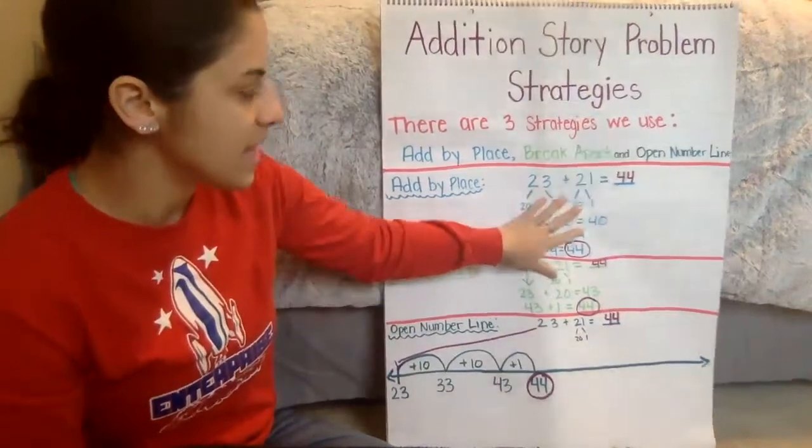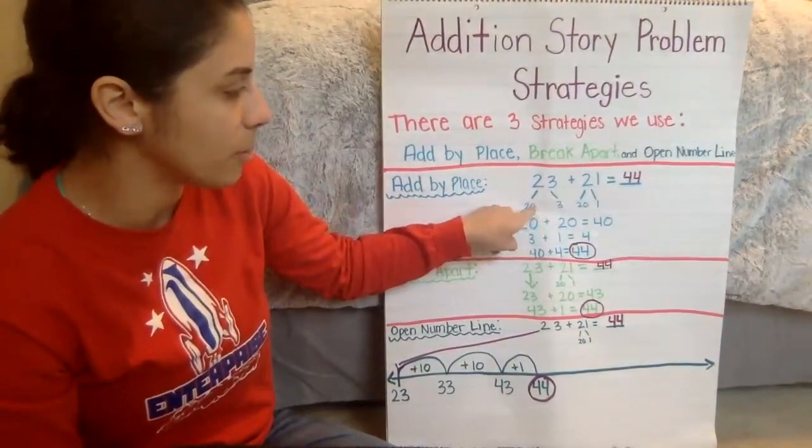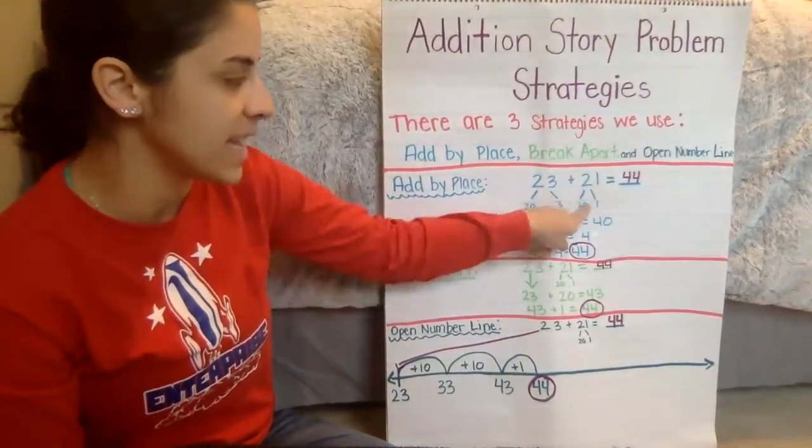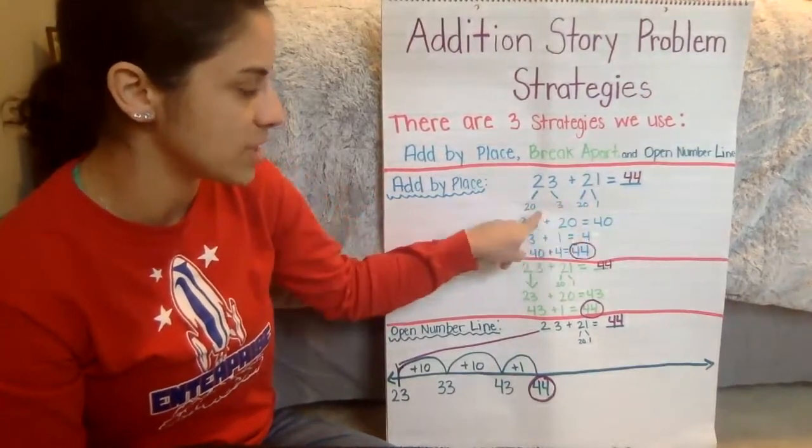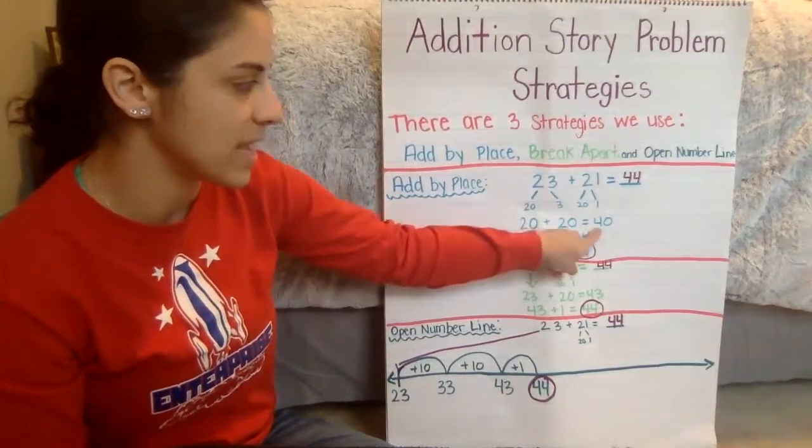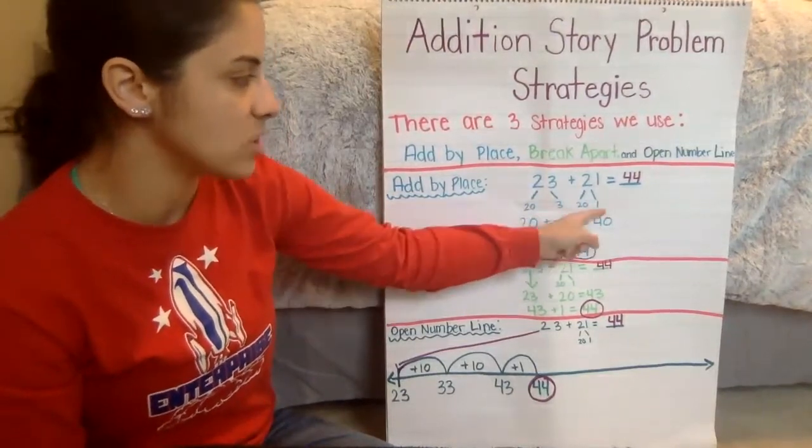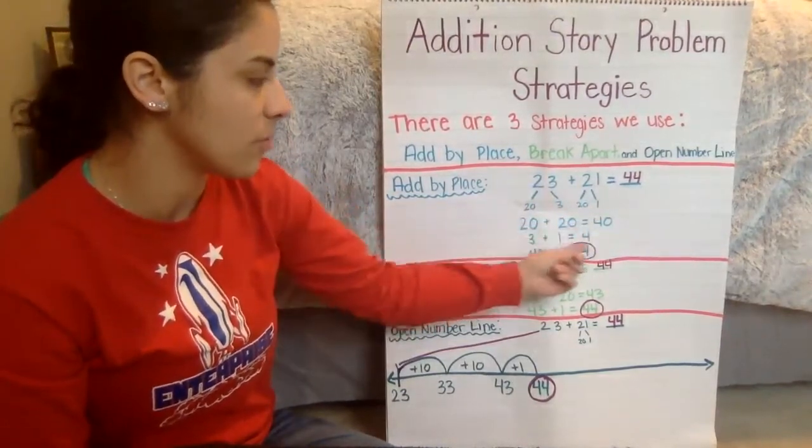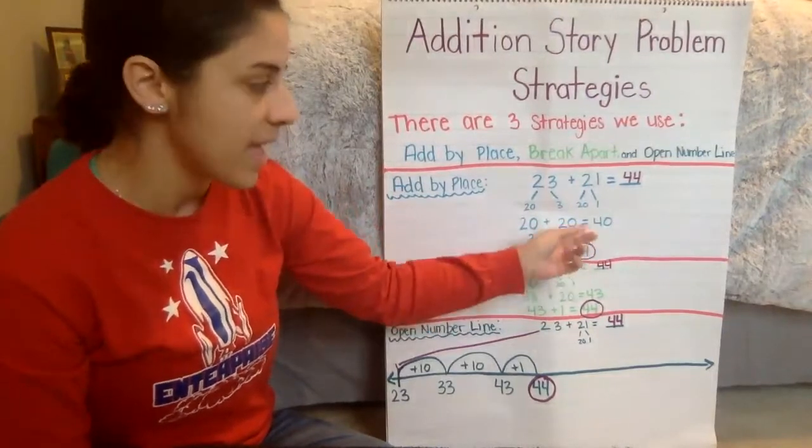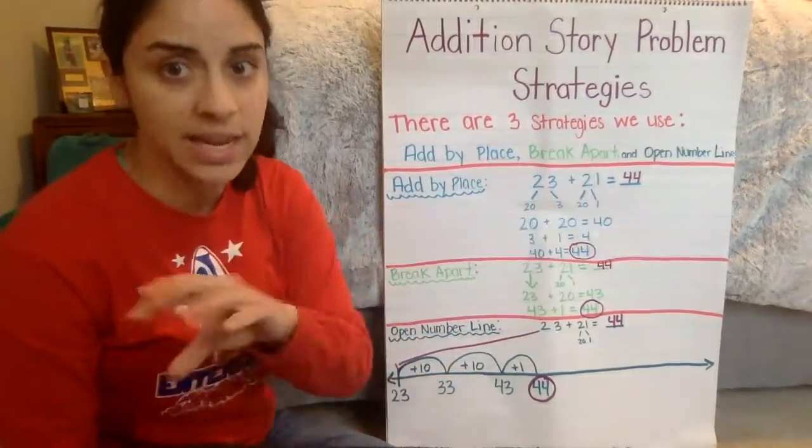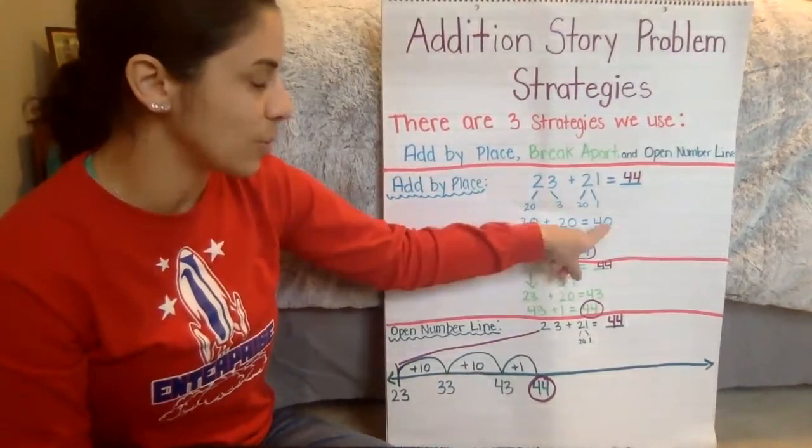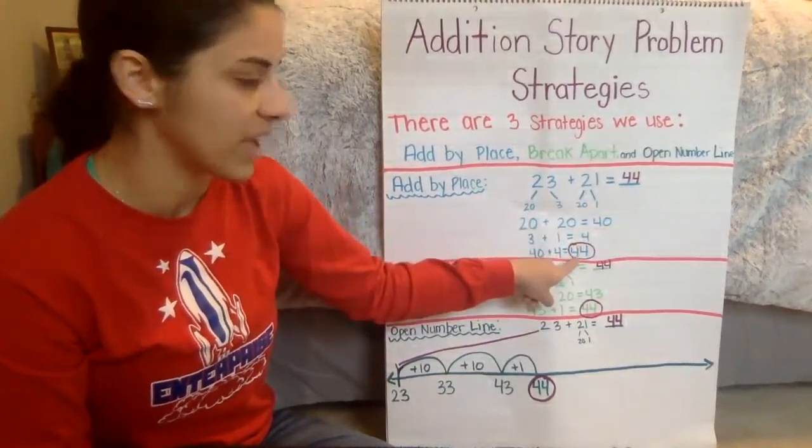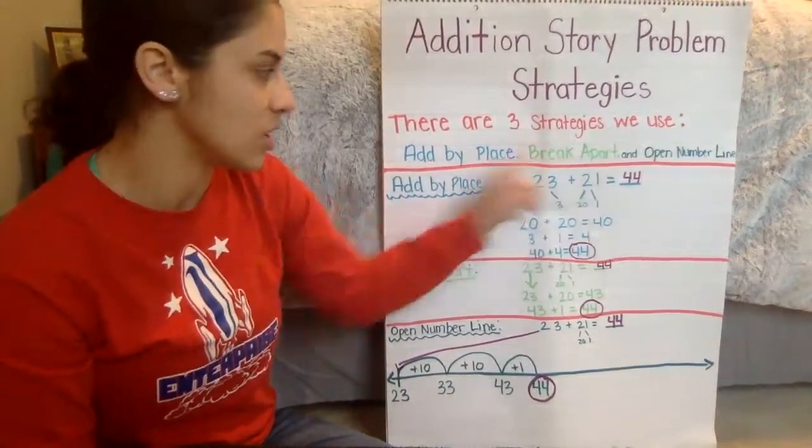Add by place is when we break apart both numbers by how many tens and how many ones, and then we add the two tens together. So for this one, we add 20 and 20 and we get 40, and then we add the two ones together, and we get 3 plus 1, which is 4. And then after we add the tens and the ones, we add those two answers together. So for this one, we would add 40 plus 4, and we get 44. So that's the answer using add by place.